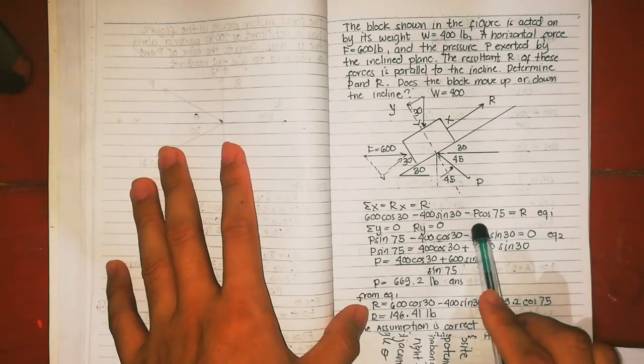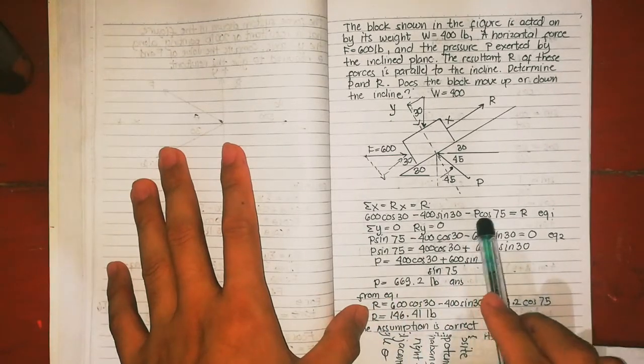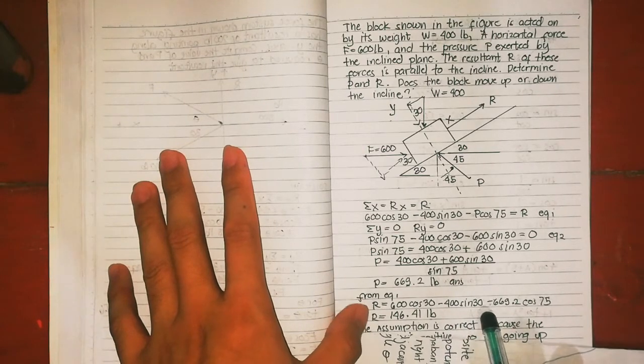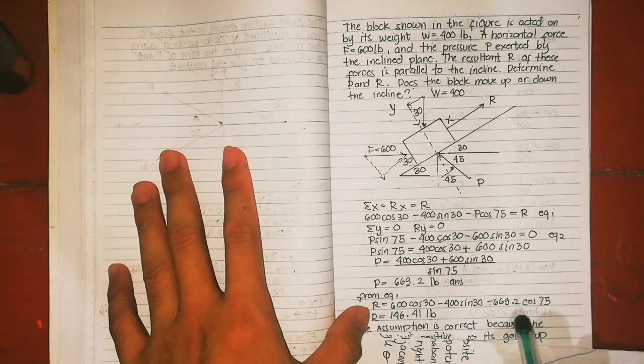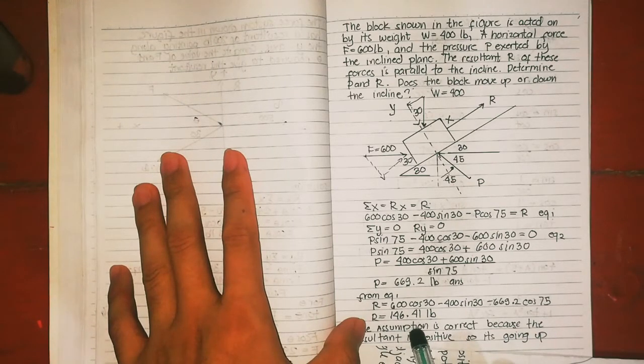Just substitute the value of P. In that equation, this is the only one with P. So 600 cos 30 minus 400 sin 30 minus 669.2 cos 75. R equals 146.41.